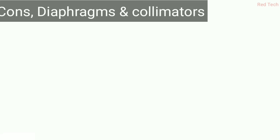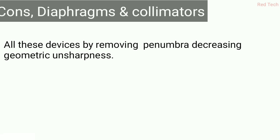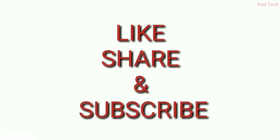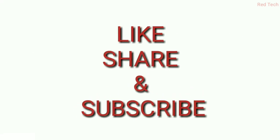The last exposure factors are cones, diaphragms, and collimators. All these devices work by removing penumbra and decreasing geometrical unsharpness in the image. Focusing with these devices helps reduce penumbra. That covers all the exposure factors. I hope all points are clear — please subscribe if you liked it, and thanks for watching.